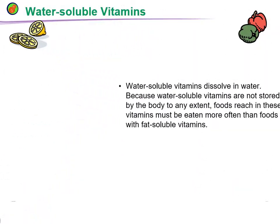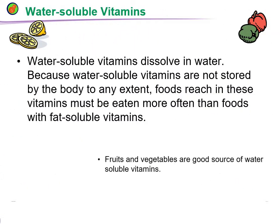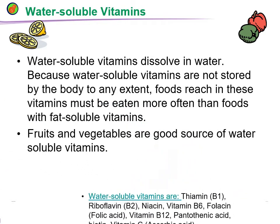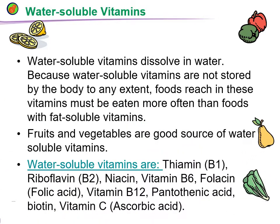Water-soluble vitamins dissolve in water. Foods containing these vitamins need to be eaten more often than foods with fat-soluble vitamins. Fruits and vegetables are a good source of water-soluble vitamins. These include thiamine (B1), B2, B6, folic acid, and vitamin C (ascorbic acid).